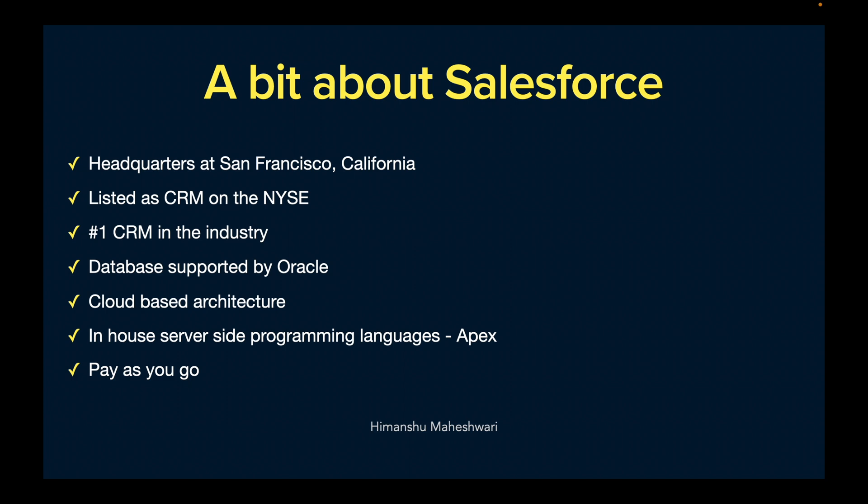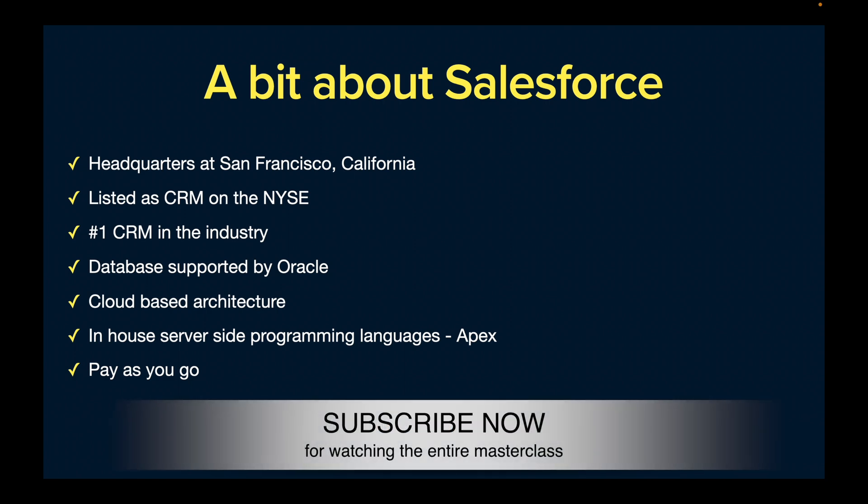Salesforce works on a pay-as-you-go model, similar to the subscription license model. Today you want to onboard 15 users — pay the license cost for 15 users. Tomorrow you have 150 — pay for 150. If you downgrade to 30 users, pay just for 30 users. That's how the pay-as-you-go model works, and that's how Salesforce earns.